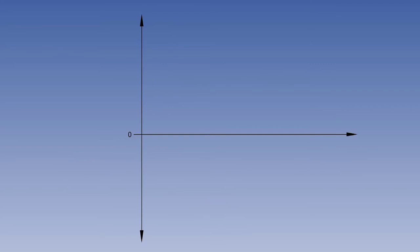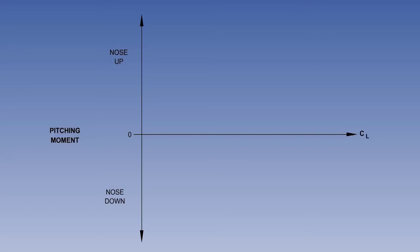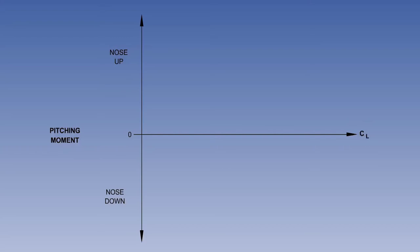We will now take what we have learned about longitudinal static stability and, using simple sketch graphs, consider some of the variables. The vertical axis represents pitching moment, with increasing nose-up pitching moment above the horizontal axis and increasing nose-down pitching moment below. The horizontal axis represents lift coefficient, increasing to the right. The horizontal axis could instead be labelled angle of attack or decreasing indicated airspeed — all three values need to be considered to give a full understanding of these graphs.